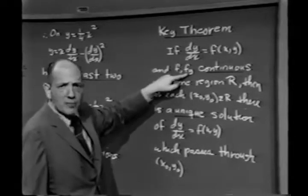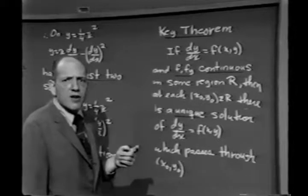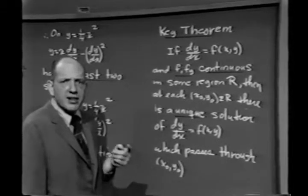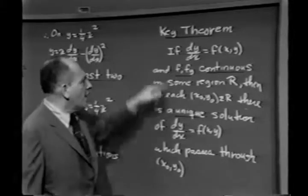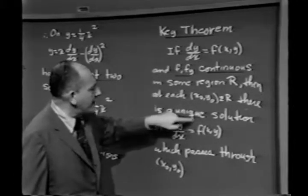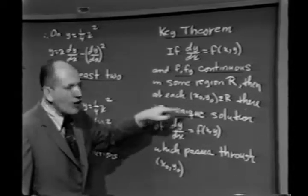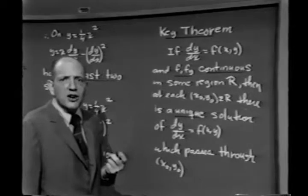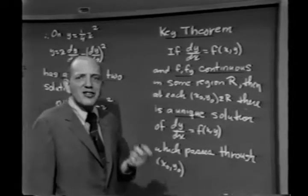These functions couldn't go bad in our problem. Consequently, since we had one solution of the form y equals cx minus c squared that passed through every point below the parabola, the fact that this theorem applies says there can't be any other solution. Because once you've found one solution, that's all there are. That's exactly what you mean by unique.